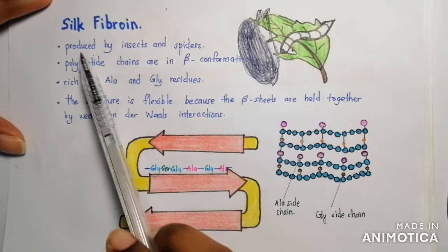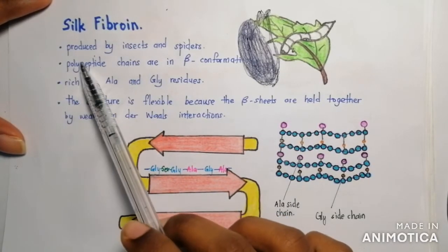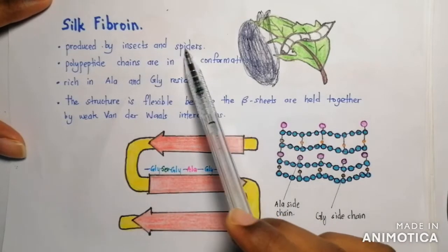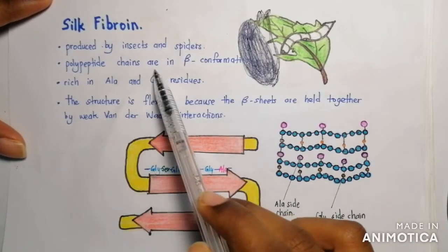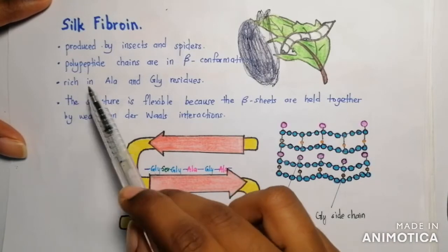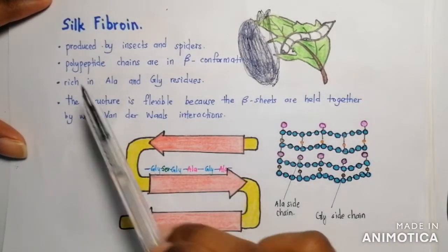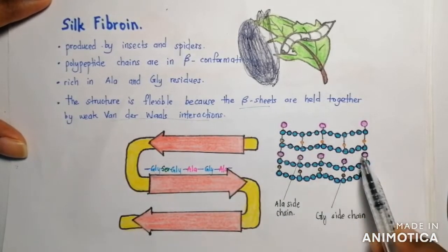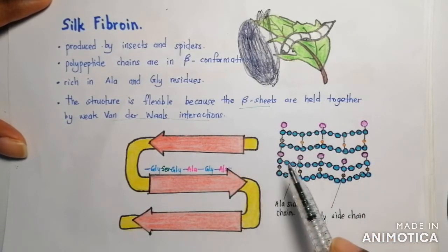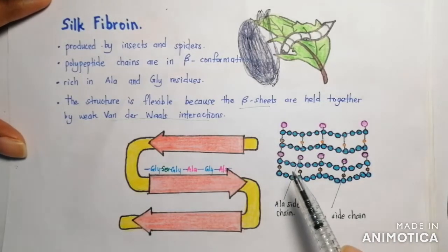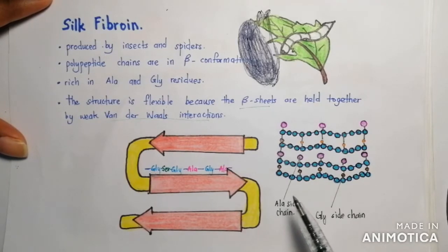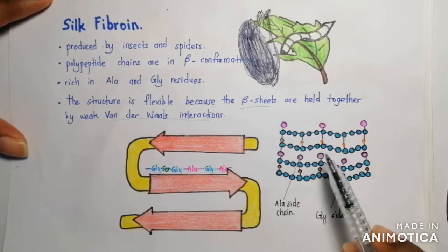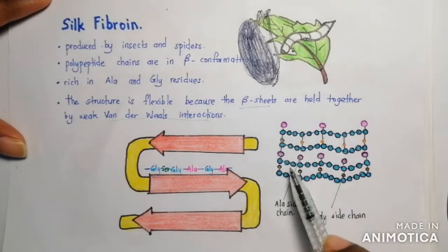Silk fibroin is not produced by humans; instead it is produced by insects and spiders. The polypeptide chains are in beta conformation, and it is rich in alanine and glycine residues. The structure is flexible because the beta sheets are held together by weak van der Waals interactions. However, it is not stretchable because the beta conformation is already highly extended. So silk fibroin is flexible but not stretchable.